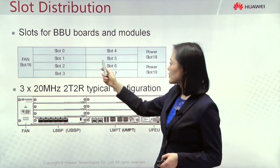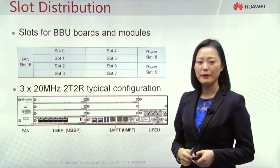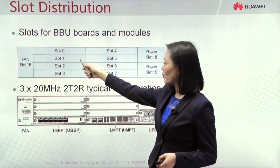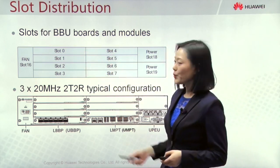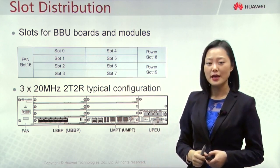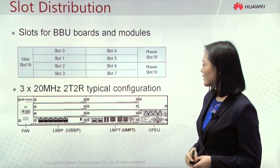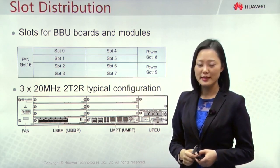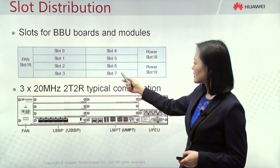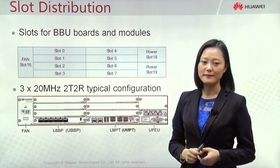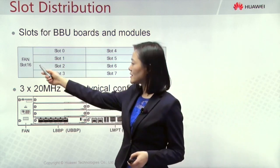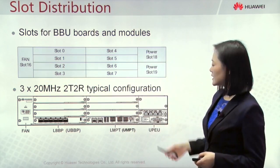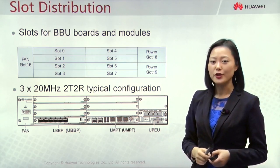Slots 0 to 5 can be configured with BBP boards — baseband processing boards. Slots 0, 1, 4, and 5 can optionally be configured with a USCU board. Slots 6 and 7 are reserved for the main processing board, with Slot 7 as priority. On the left side, Slot 16 is for the fan module. Slots 18 and 19 are for the power and environment module — UPEU.